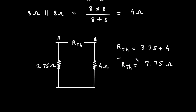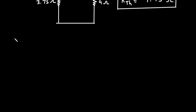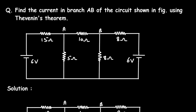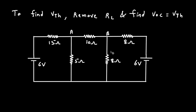Now we got the value of Thevenin's resistance RTH as 7.75 ohm. The next step is to find the value of VTH. To find VTH, we will remove RL and find VOC, which equals VTH — the open circuit voltage at the terminals with all independent sources active. So, let's remove RL first. Here, this will be our VTH.